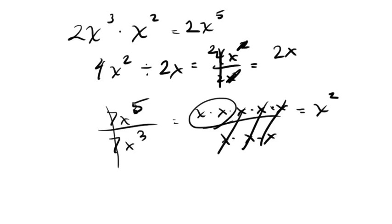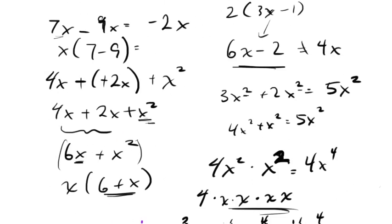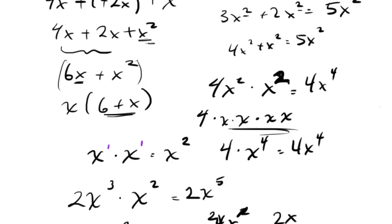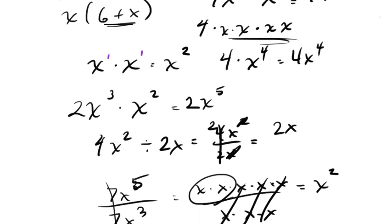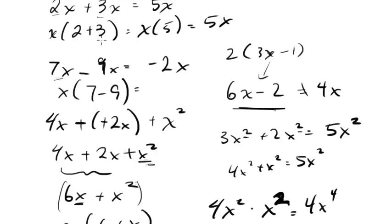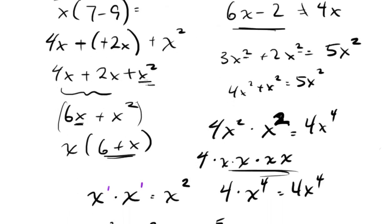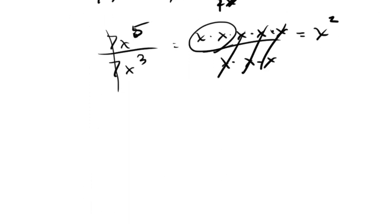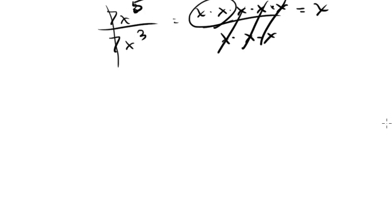Being able to distinguish between when you can add or subtract terms versus how you multiply terms is key. Note: you don't need the same exponent to multiply, whereas you do need the same exponent to add. You've got to be very familiar and comfortable with that — it's something you should be able to see, recognize, and do instantly. If you're spending time thinking about how to handle these, you're losing time.